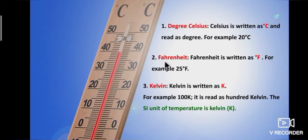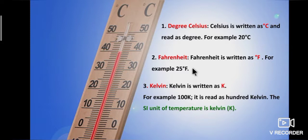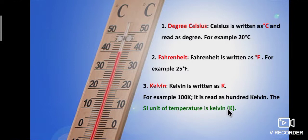Fahrenheit is written as degree Fahrenheit; for example, 25 degree Fahrenheit. The third unit is Kelvin, written as capital K. For example, 100 K is read as 100 Kelvin. The SI unit of temperature is Kelvin.